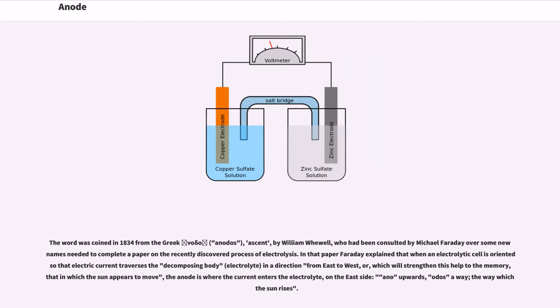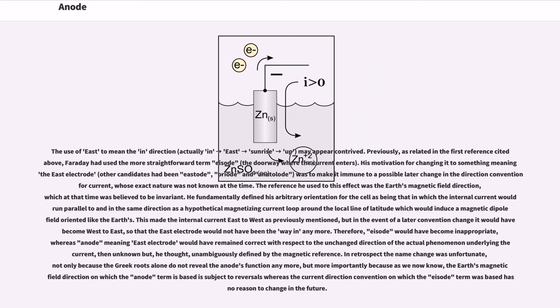Whewell had been consulted by Michael Faraday over some new names needed to complete a paper on the recently discovered process of electrolysis. In that paper Faraday explained that when an electrolytic cell is oriented so that electric current traverses the decomposing body (electrolyte) in a direction from east to west, or which will strengthen this help to the memory, that in which the sun appears to move, the anode is where the current enters the electrolyte, on the east side (ἄνοδος upwards, ὁδός way, the way which the sun rises).